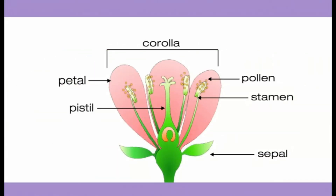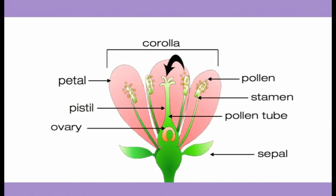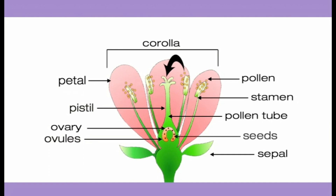Once the pollen grains stick to the pistil, a pollen tube begins to form. The pollen tube extends down to the ovary, the lowermost part of the pistil. In the ovary we find the ovules. The ovules develop into seeds.